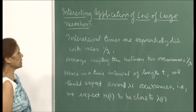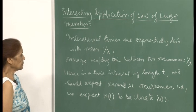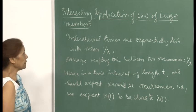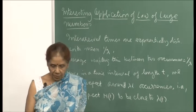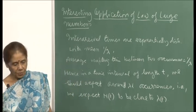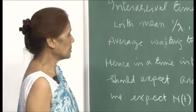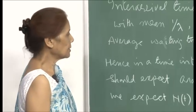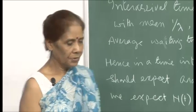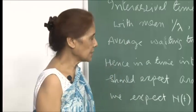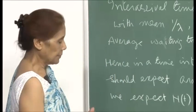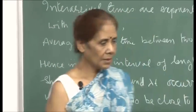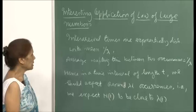I had to wait for this example to discuss it, because when we talked about the weak law of large numbers and strong law of large numbers, I had not yet talked about the Poisson process. So I waited until I had introduced the Poisson process to give you this example. In fact, even when we were talking about the law of large numbers, I had shown you some examples. This is one of the interesting ones.